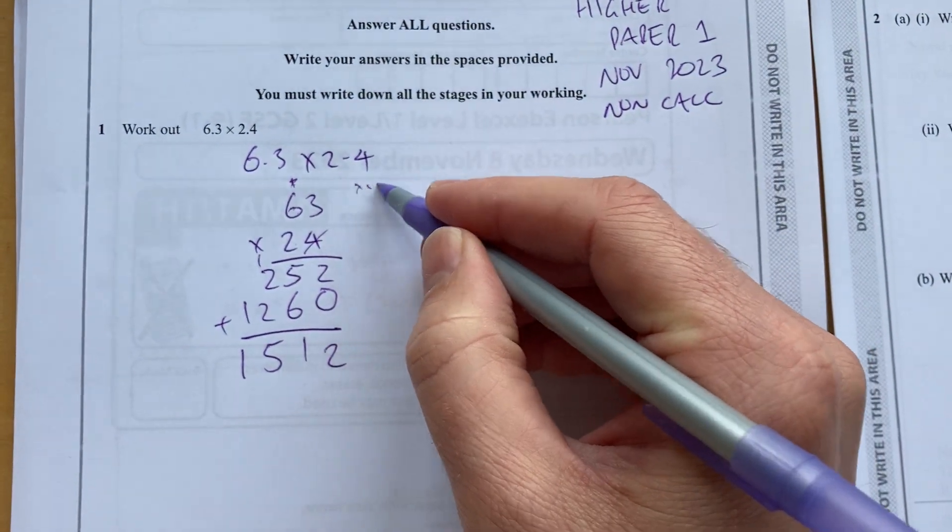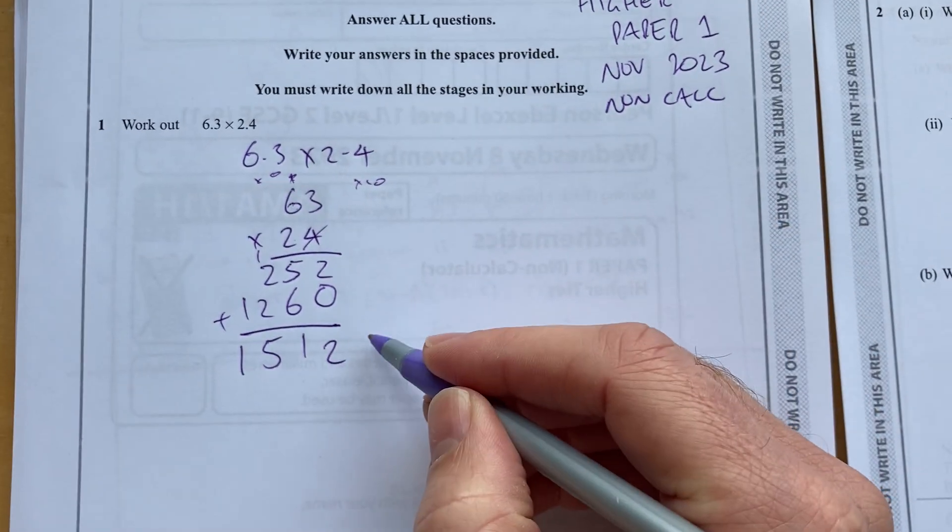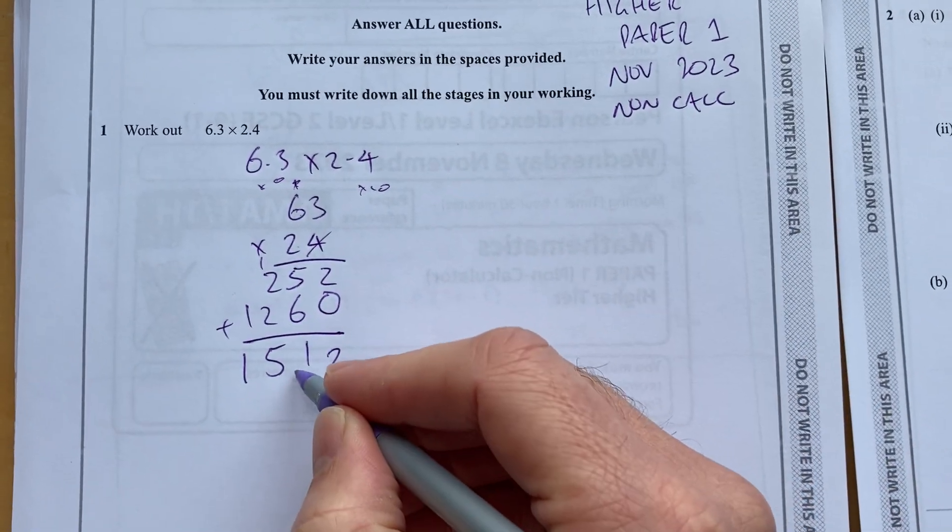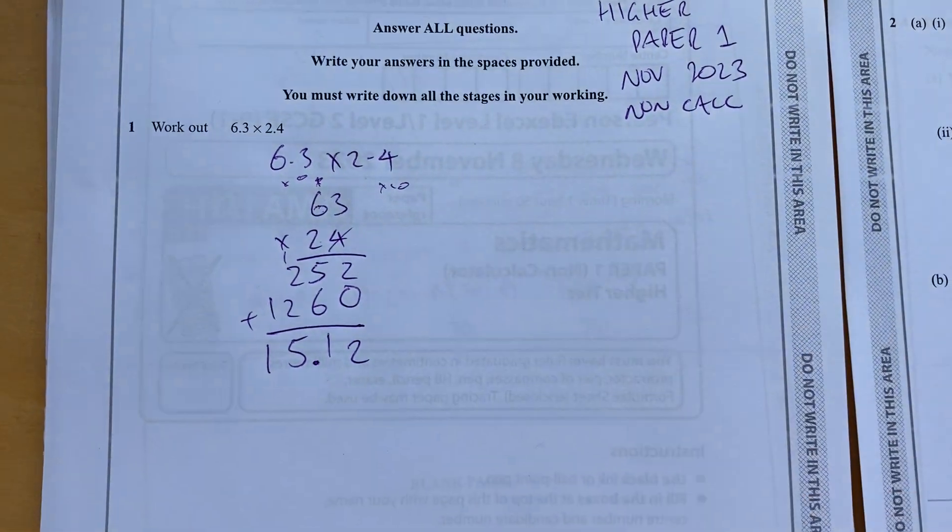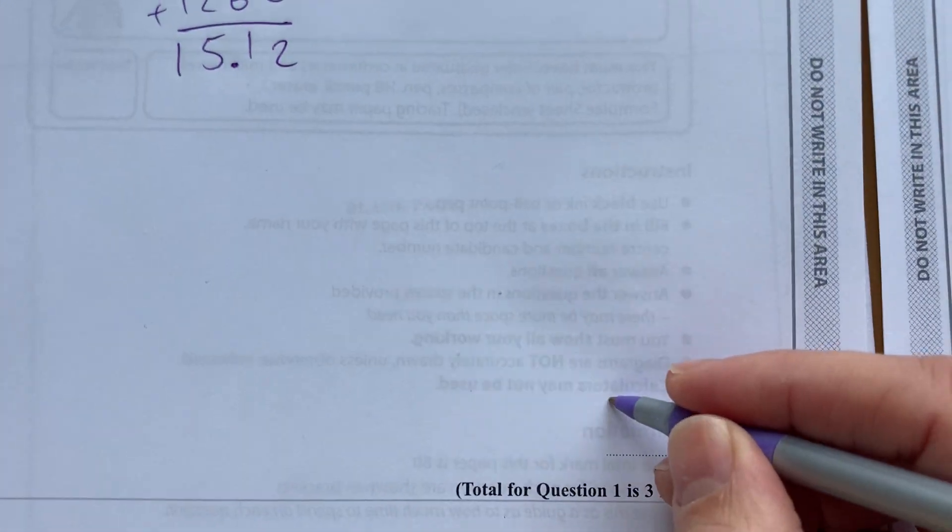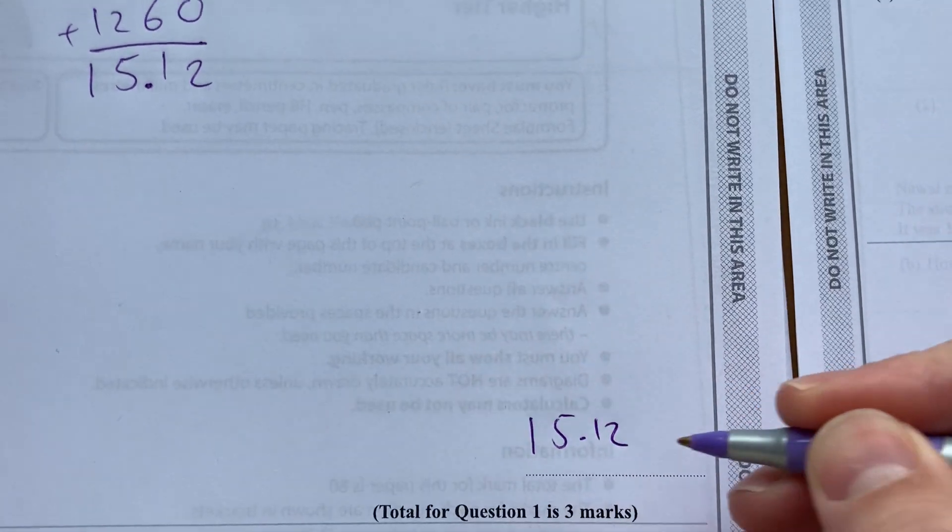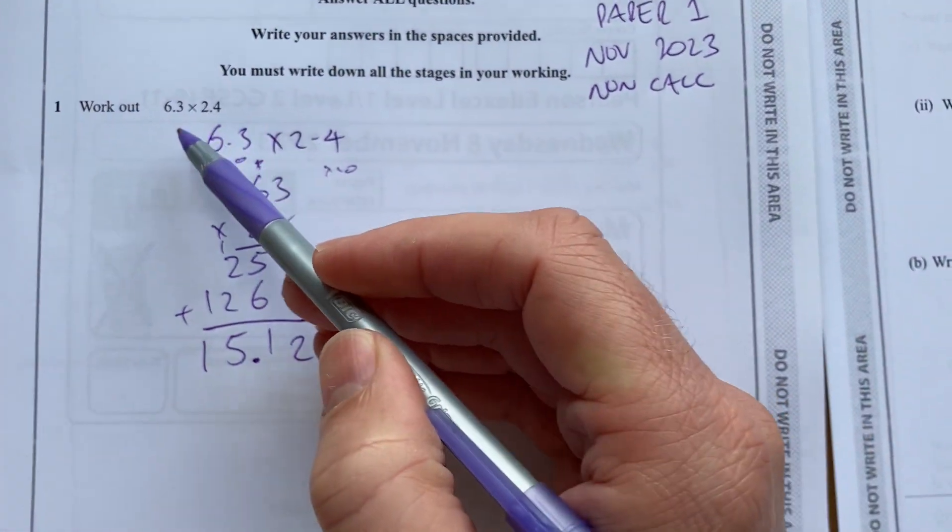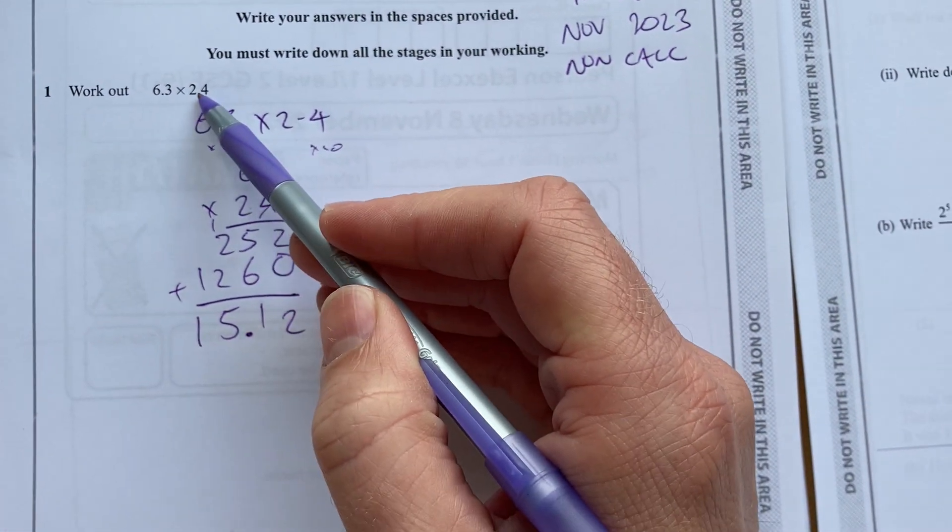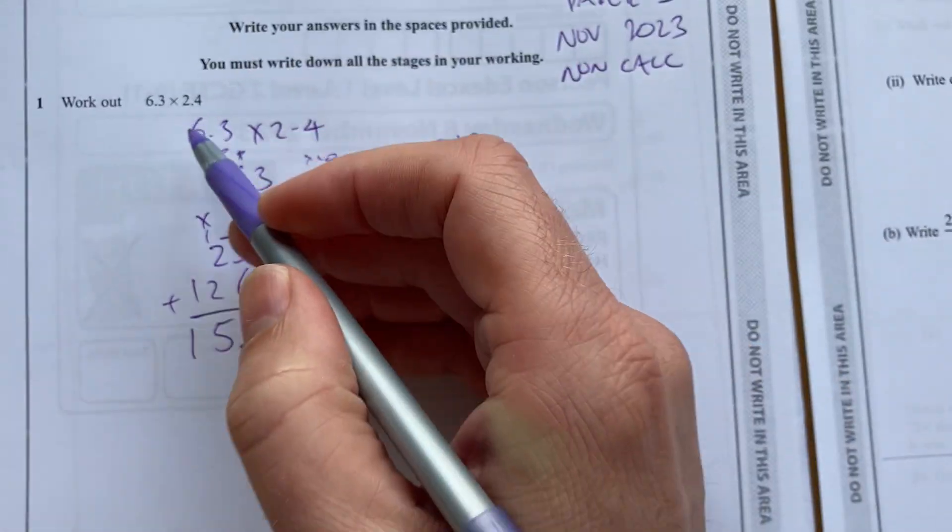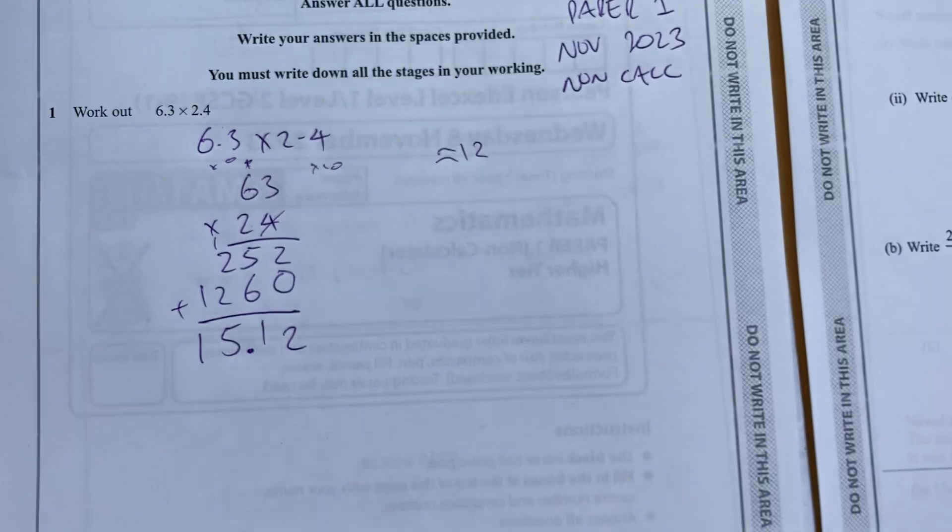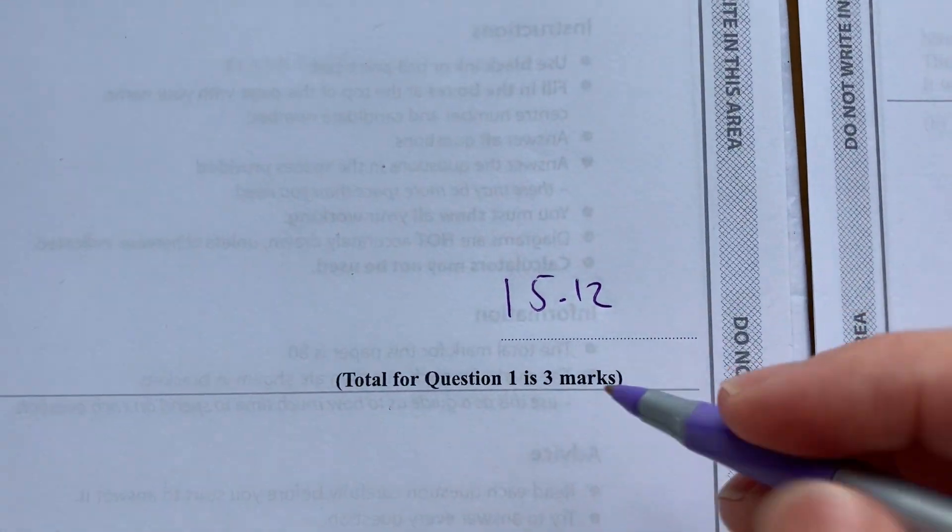I multiplied them both by 10, so I need to now divide by 100, as in remove the decimal points and put the decimal points back in, 15.12. One key thing to do when you do a question like this is to see, does it make sense? About 6 times about 2 should get a number bigger than 12, not quite 18. That's a 3 mark question.